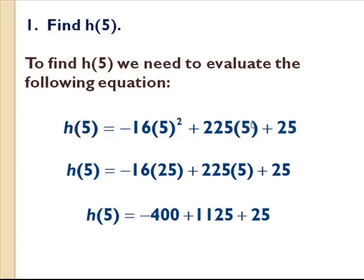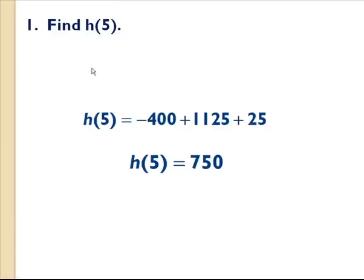So this becomes a simple algebra problem. 5 squared is 25. 16 times 25 is 400. Don't forget the negative sign. 225 times 5 is 1,125 and so forth. When you clean everything up you're left with h(5) equals 750.